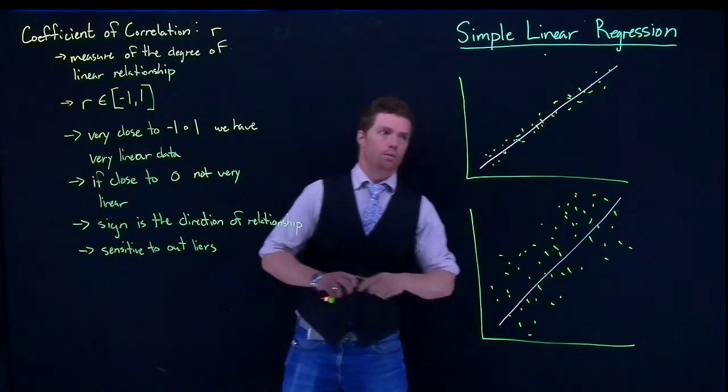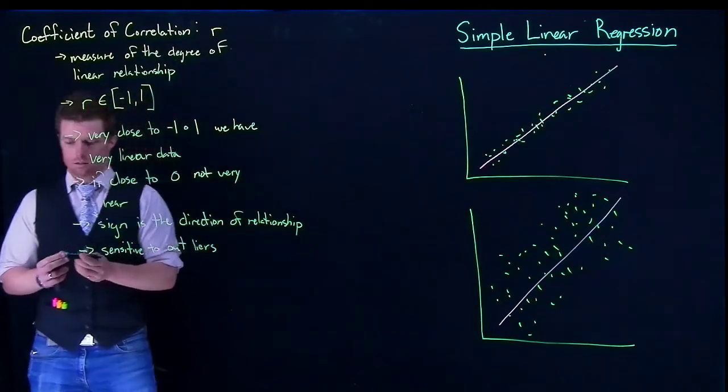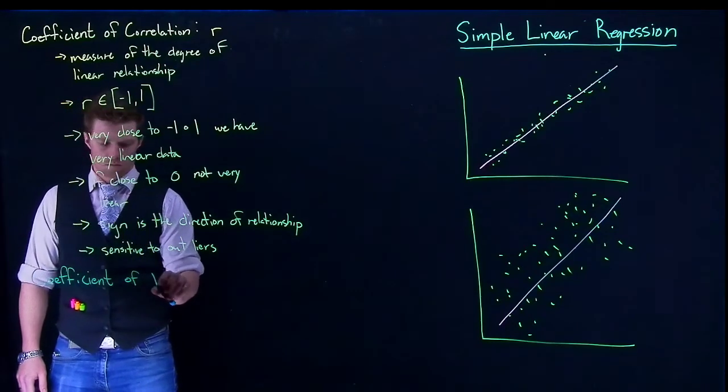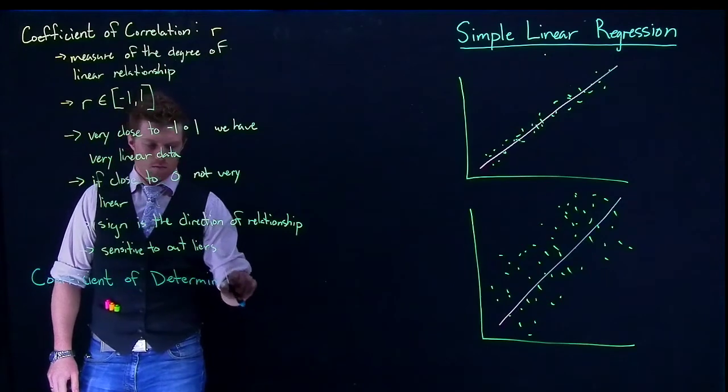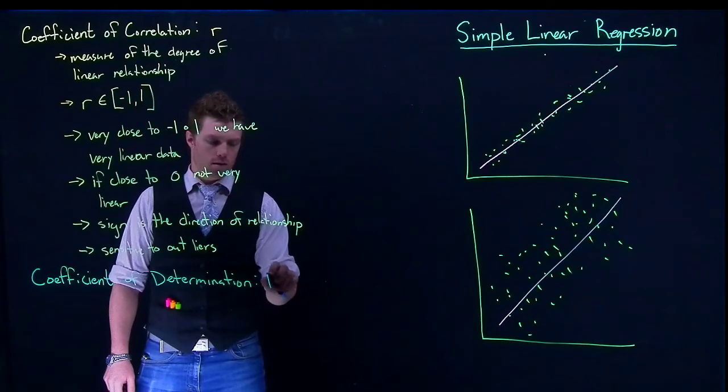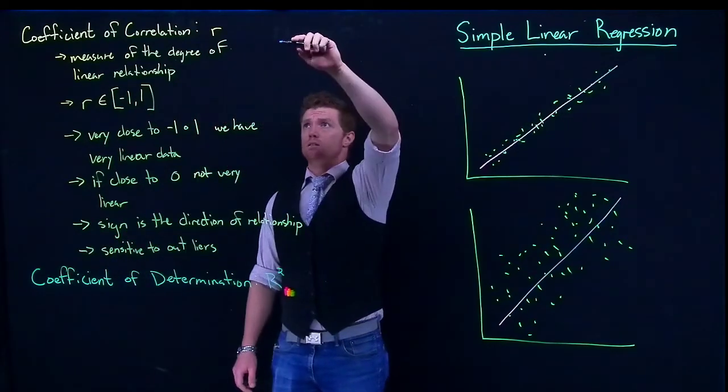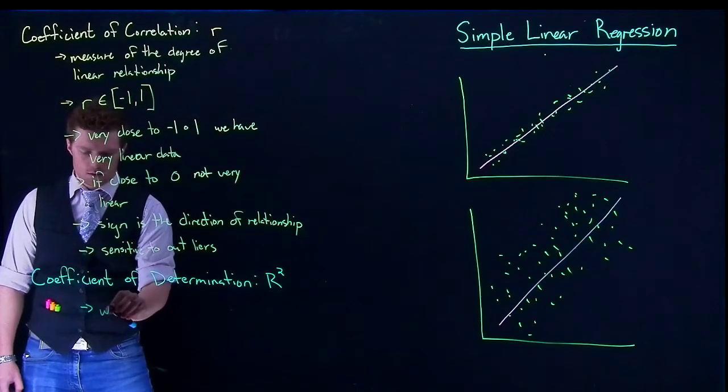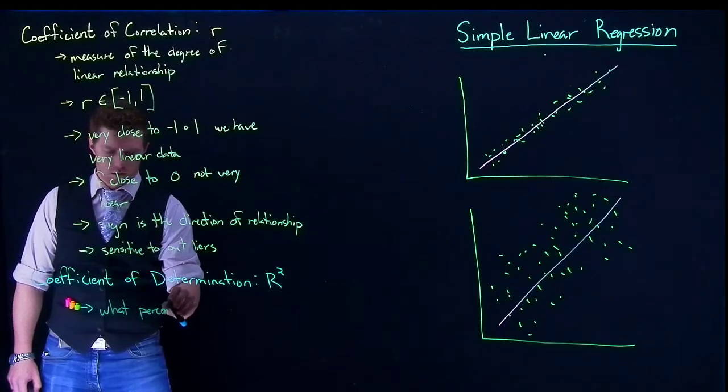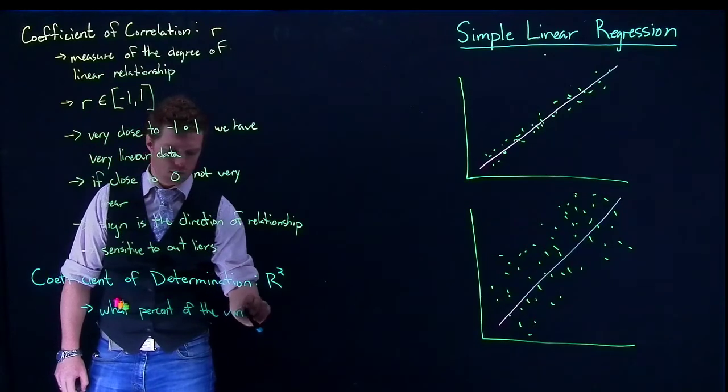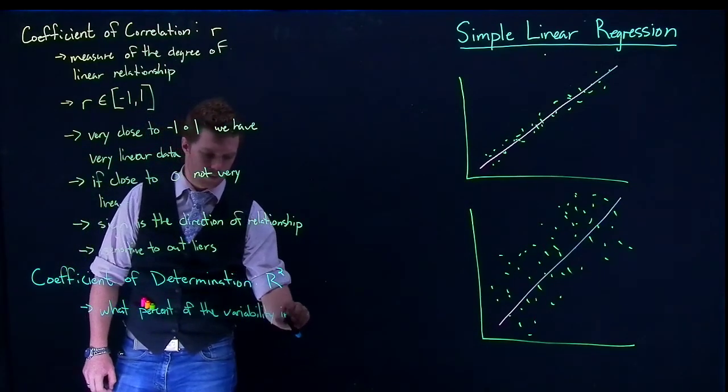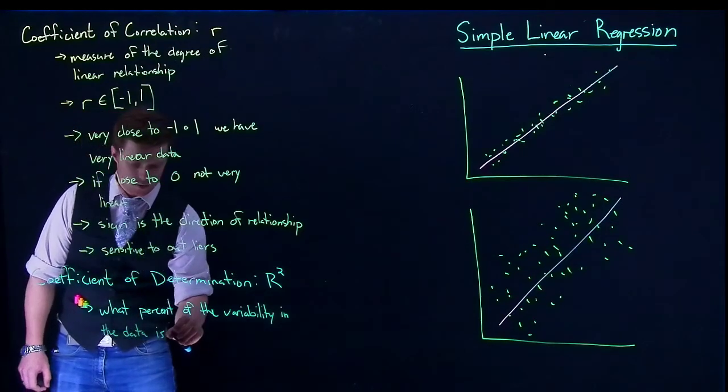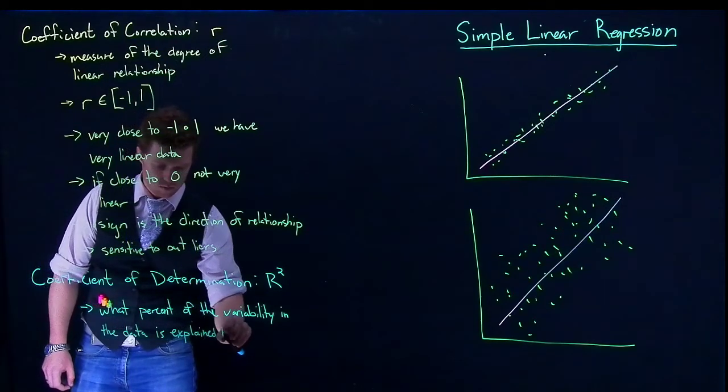There is another one that we can talk about too, and it is called the coefficient of determination. Most of the time though, we just call this guy r squared. And it really is just little r squared. And our coefficient of determination, what it tells us, is what percent of the variability in the data is explained by the model.